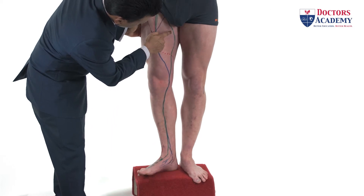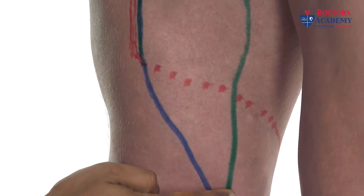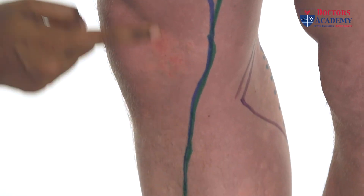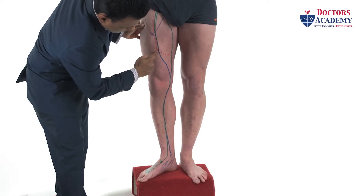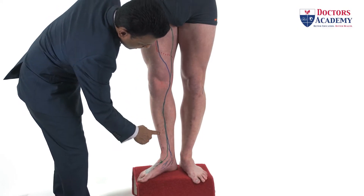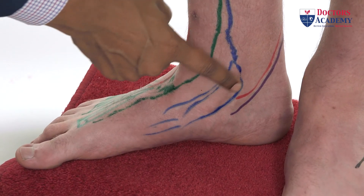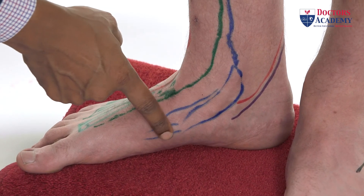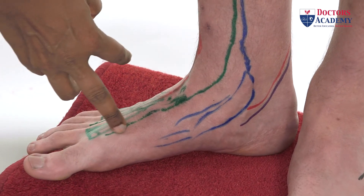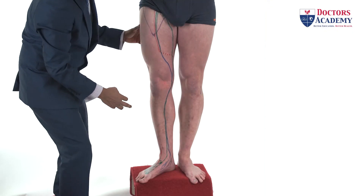What we are seeing here is the long saphenous vein accompanied by the saphenous nerve, which is a continuation of the femoral nerve. The saphenous nerve supplies sensation to the medial aspect of the foot and the ankle. This is the dorsal venous arch giving rise to the long saphenous vein.